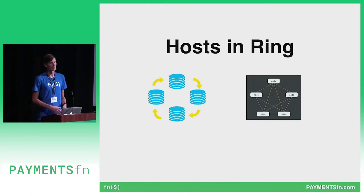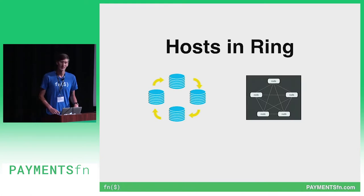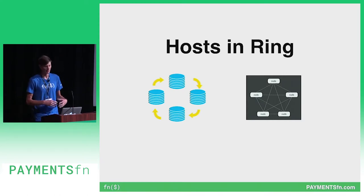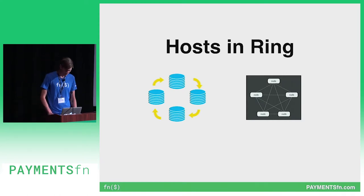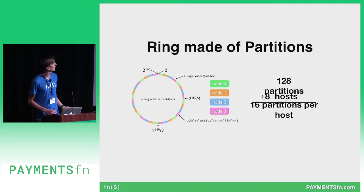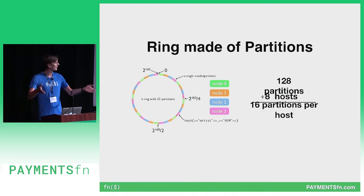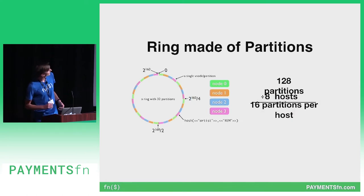The most important piece of infrastructure is hosts. A big part of Riak is creating this ring, and you need a few hosts to create that ring. That ring is simply just made up of partitions. You break up that ring into partitions and then Riak spreads those partitions evenly amongst the hosts.